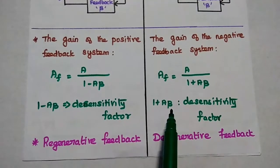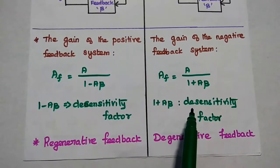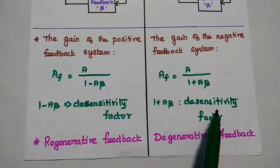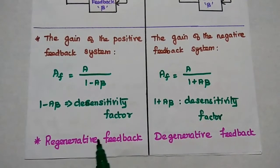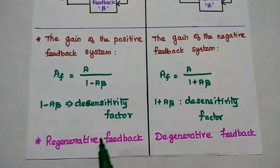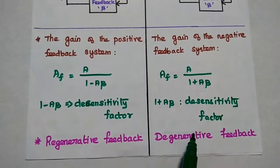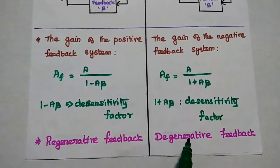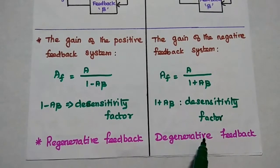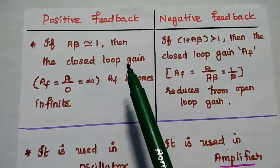For negative feedback, 1 plus A·beta is represented as the desensitivity factor. Positive feedback is also called regenerative feedback, while negative feedback is also called degenerative feedback.